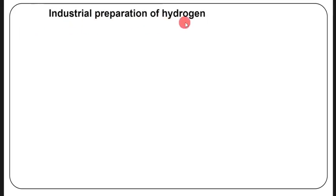Hello guys, welcome to the chemistry lesson. In today's lesson we'll be continuing with the nonmetals. In our previous lesson we looked at hydrogen — the physical properties, chemical properties, preparation of hydrogen in the laboratory, and the uses of hydrogen. Today we'll continue and look at the industrial preparation of hydrogen, which will conclude the lesson on hydrogen.